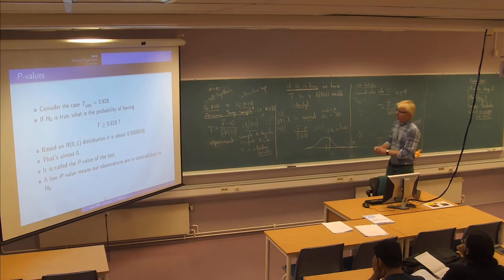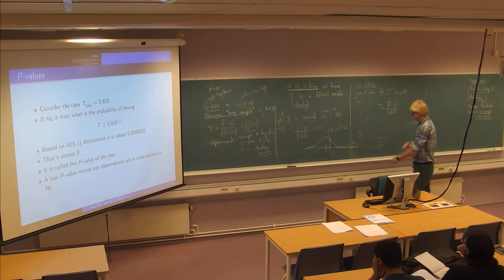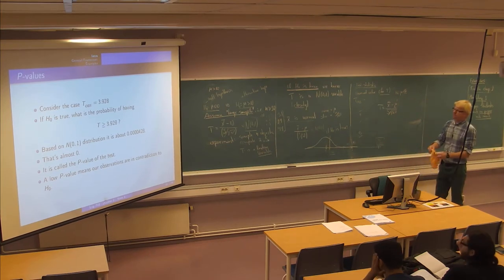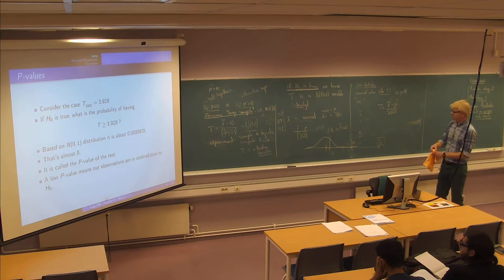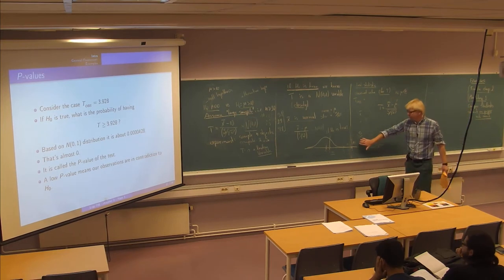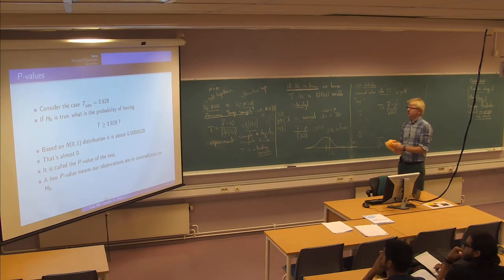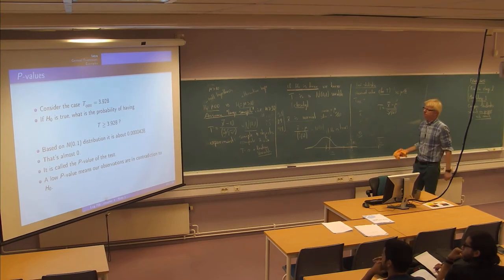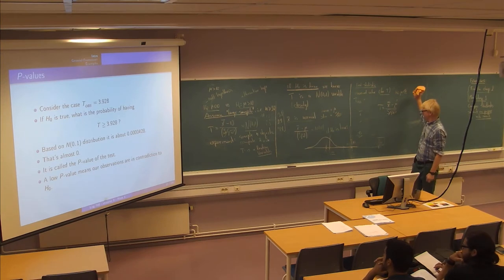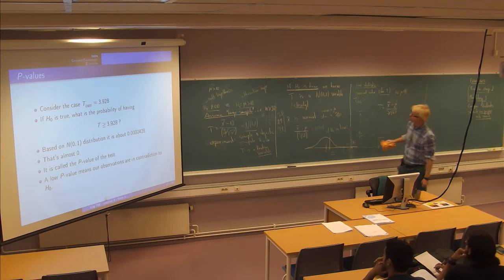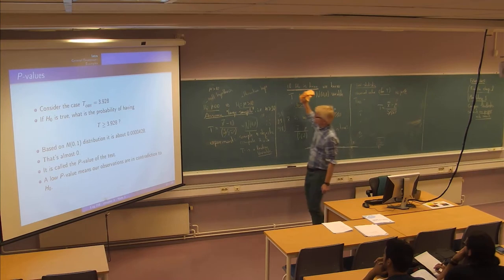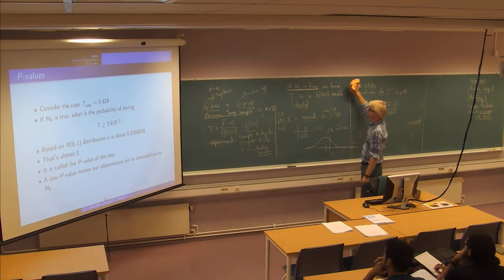We can introduce a concept called p-values, because that's going to measure the degree of conflict between the observation and h-zero being true. It's a very intuitive concept, and you can find an intuitive place to put it.